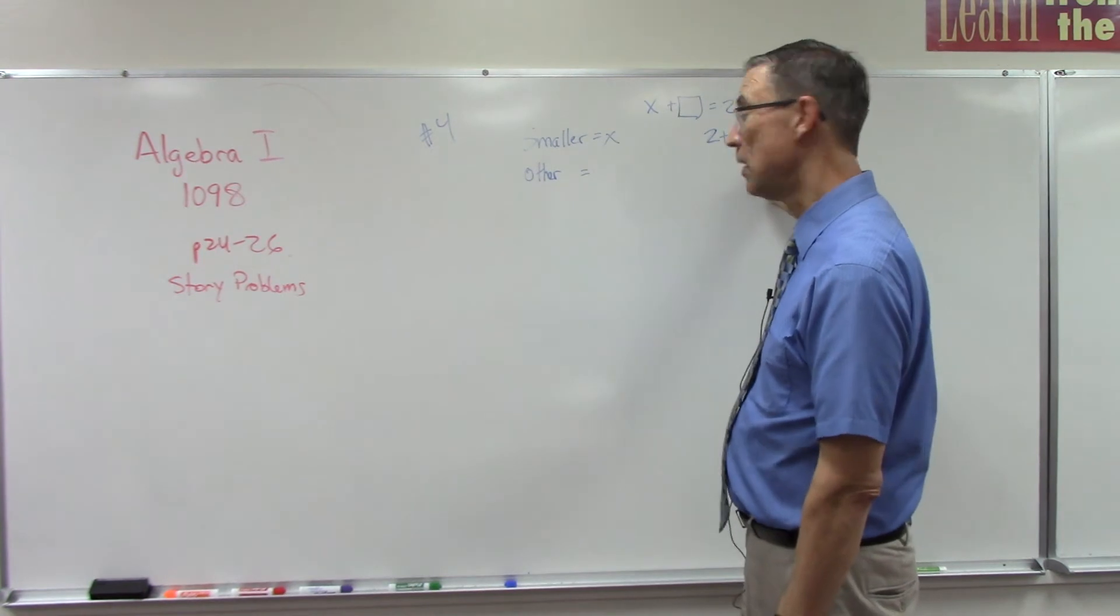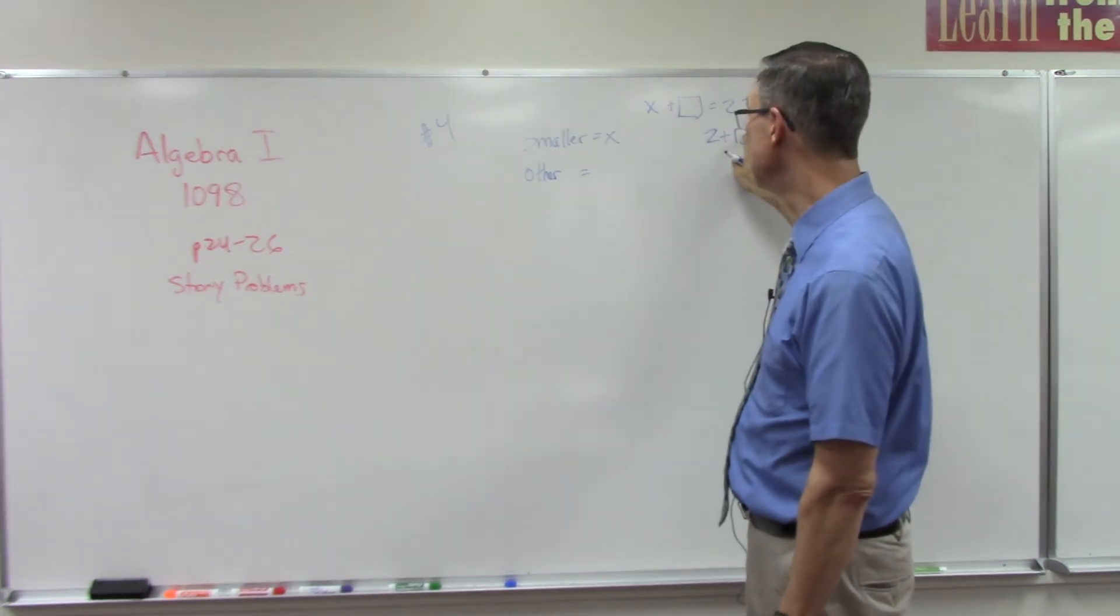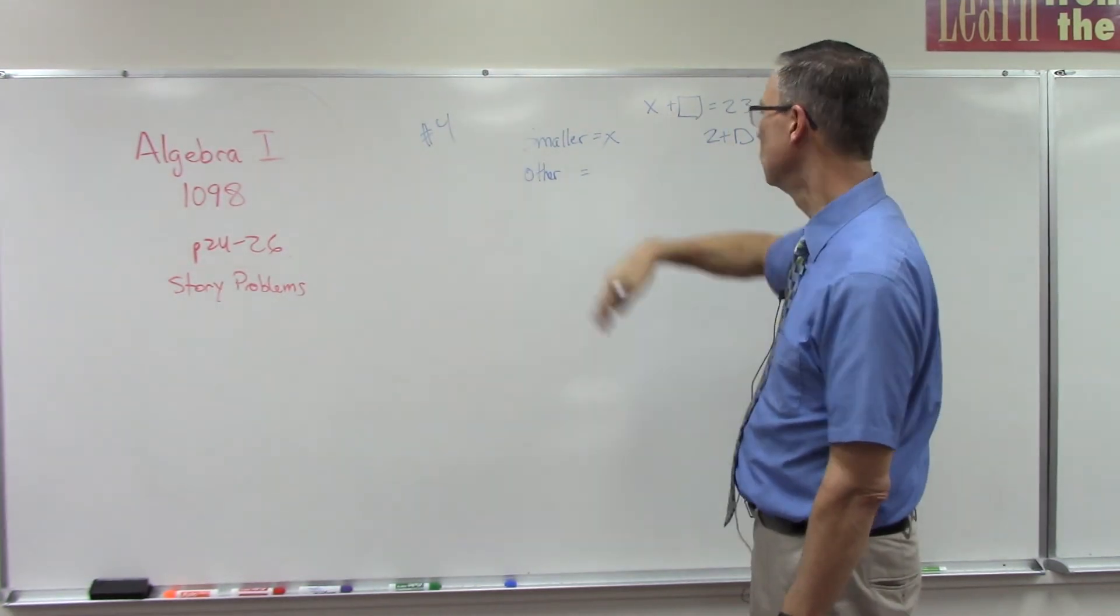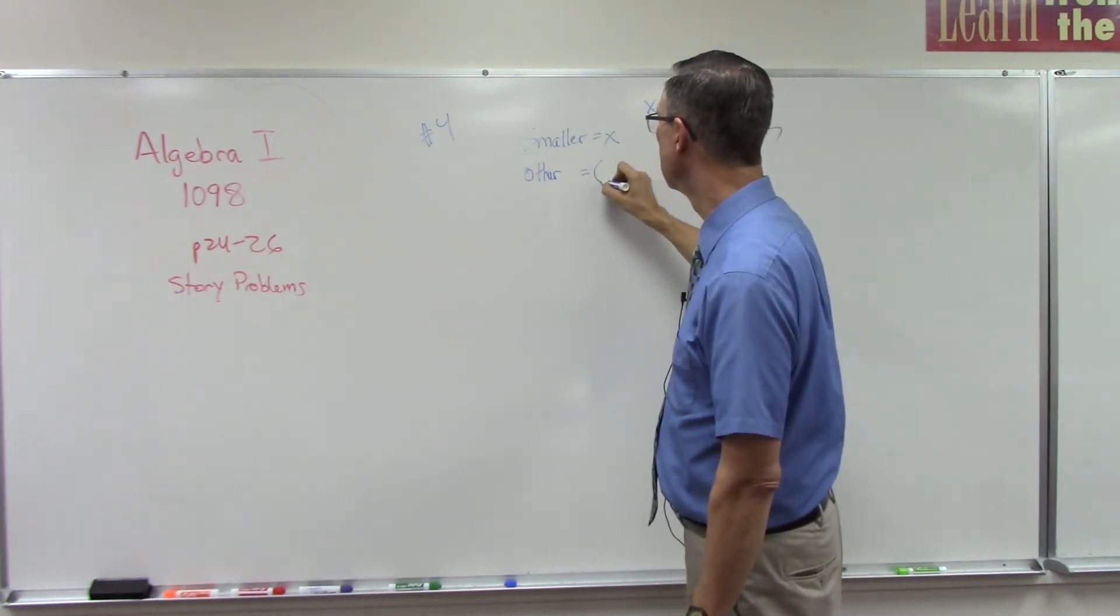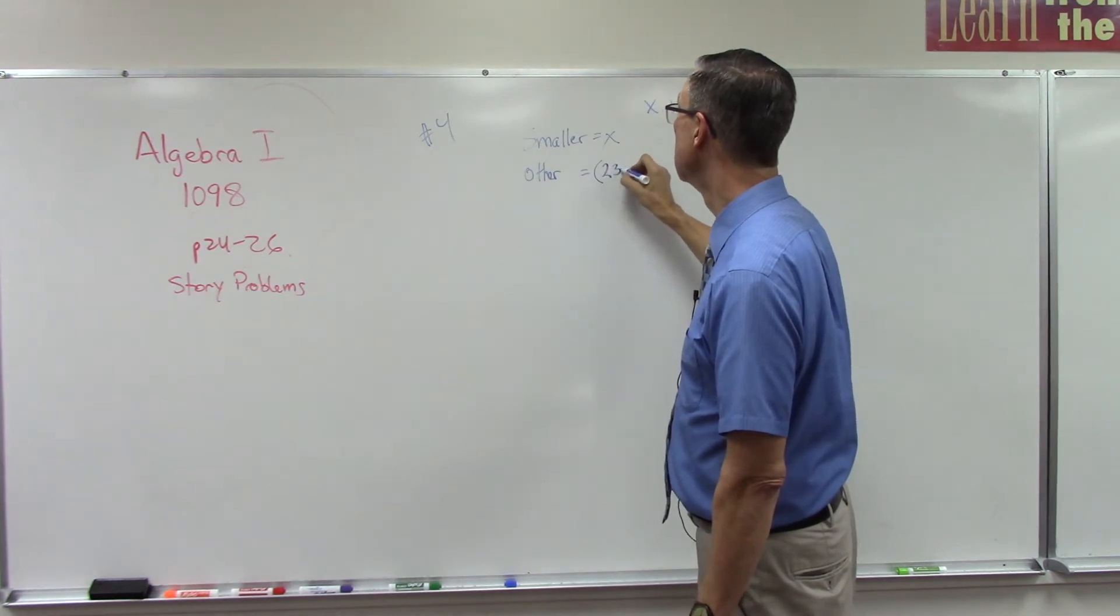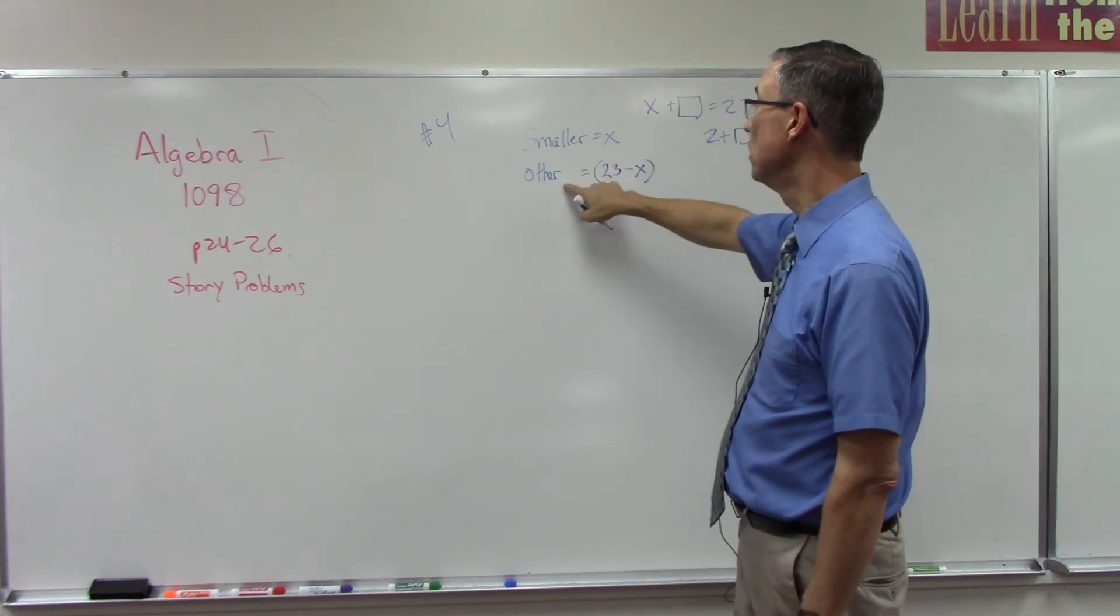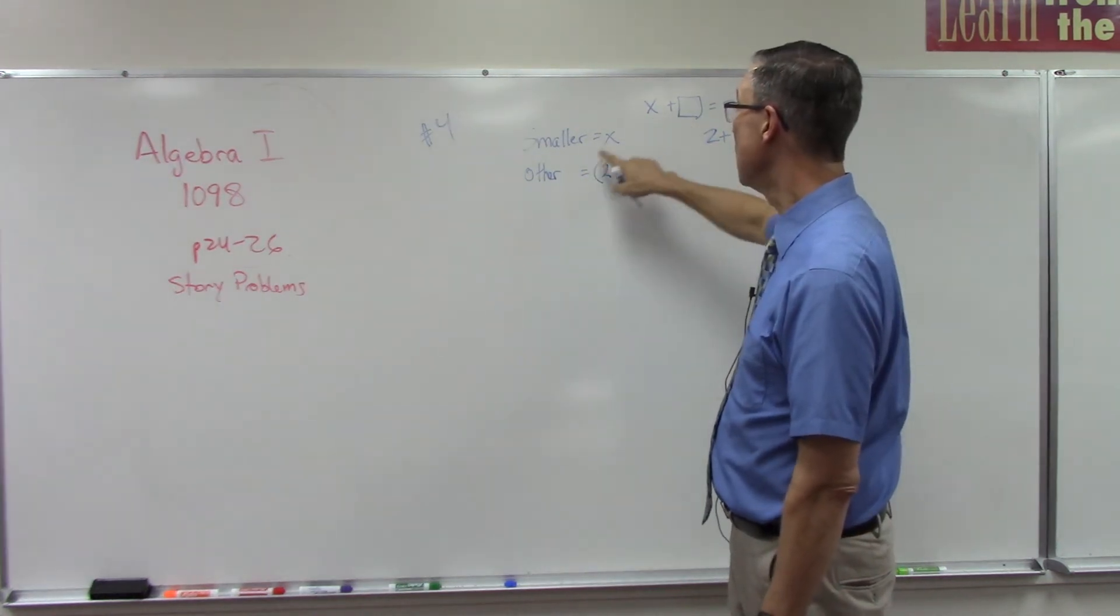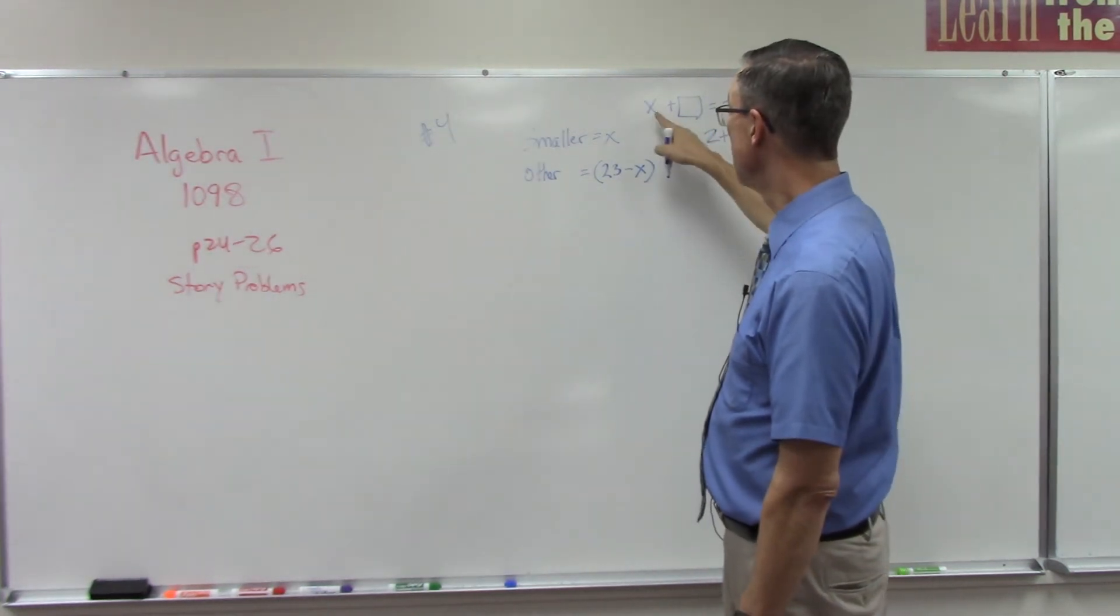You would take the 7 and subtract the 2, and you'd get 5, and that would be the number you'd fill in the blank. So here I don't know what the number is—that's what we're setting this whole thing up to solve for. But I'm going to use a quantity, so I'm going to put it in parentheses, and we can call it 23 minus x. So if x is 10, then the other number has to be 13. If this is 5, then the other number has to be 18. The point is that when you add those two numbers together, you should get 23.